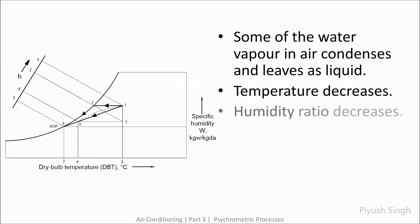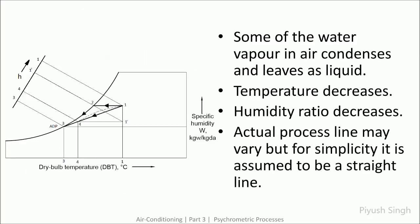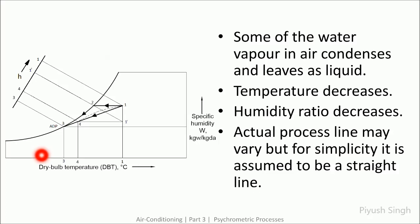In this process, some condensation takes place, so there is a net drop in moisture content of the incoming air and hence a drop in specific humidity. There is also a drop in dry bulb temperature. Since we are approaching the saturation line, relative humidity increases. There is also a drop in specific enthalpy.